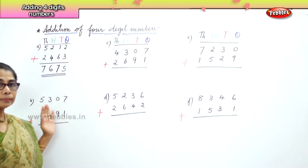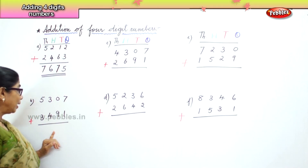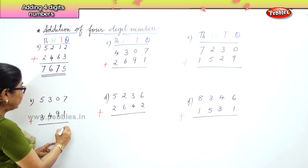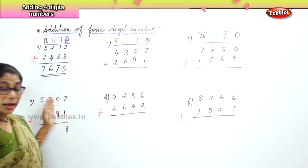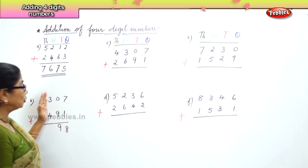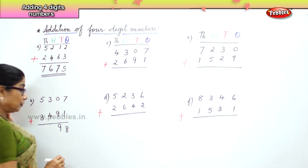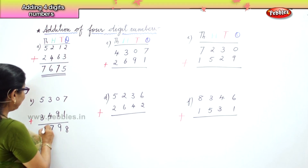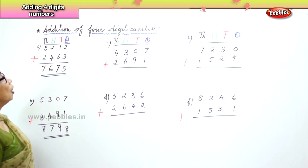Let's go to the next sum. You have five thousand three hundred and seven plus three thousand four hundred and ninety-one. In the ones place, you have seven ones and one one — seven plus one is eight ones. In the tens place, you have zero and nine, so just put down nine. In the hundreds place, three hundreds and four hundreds — three plus four is seven hundred. And in the thousands place, five plus three is eight thousand.